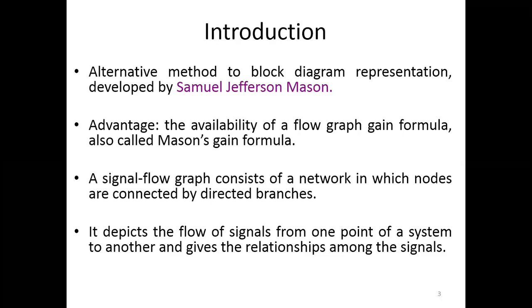A signal flow graph consists of a network in which nodes are connected by directed branches. It depicts the flow of signal from one point of a system to another and gives the relationships among the signals — meaning the signal moves from one node to another node.